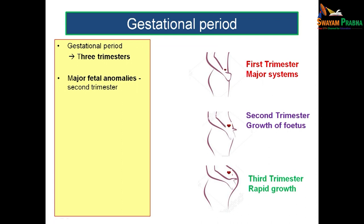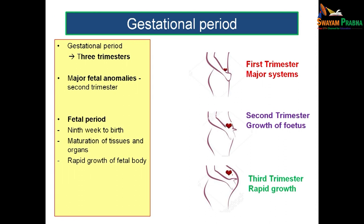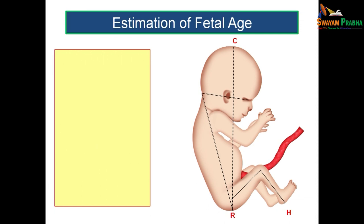During the second trimester, there is growth of the fetus — the systems already developed in the first trimester now grow. The third trimester is followed by rapid growth. Major fetal anomalies can typically be detected during the second trimester. The fetal period is defined as from the ninth week till birth, during which there is maturation of tissues and organs followed by rapid growth.